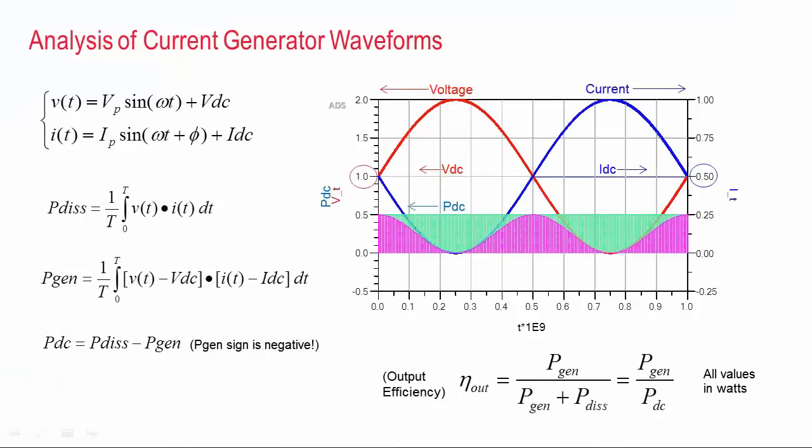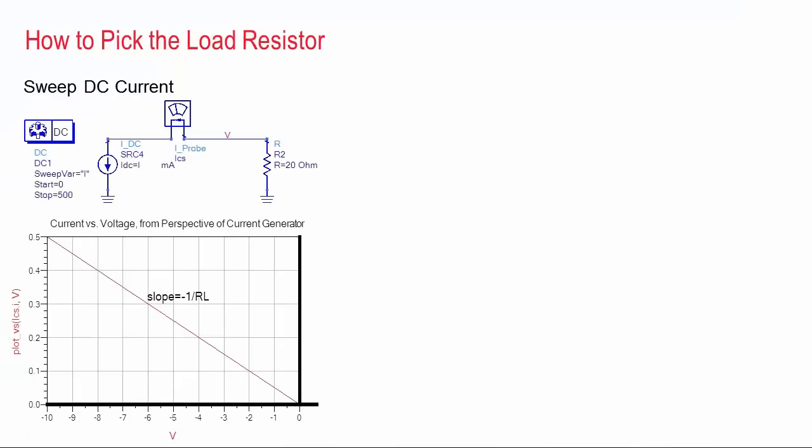And finally, let's talk about how to pick the load resistor. So to start, I'll take the configuration that I showed earlier, with current source and a resistor, and I'll sweep the current in a DC sense. And then I'll plot the current versus the voltage, current on the y-axis, voltage on the x-axis. And I get a simple negatively sloped line. Now the magnitude of the slope is equal to 1 over the resistance, since the slope is y over x, or current over voltage.